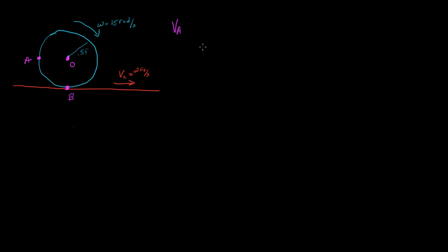In this problem we have a cylinder that rolls without slipping and it has an angular velocity omega of 15 radians per second. This cylinder is on a conveyor belt, and this conveyor belt is moving at a velocity of 2 feet per second. We're asked to figure out what the velocity of point A is. B is the point at the ground, O is the middle of the cylinder, and the radius of the cylinder is 0.5 feet.